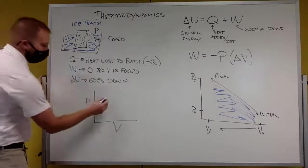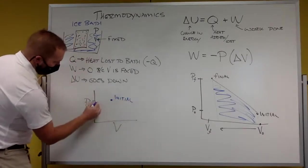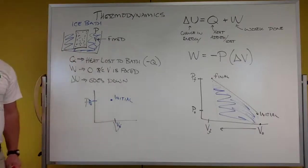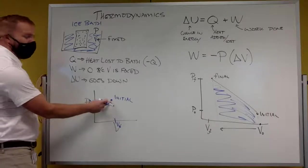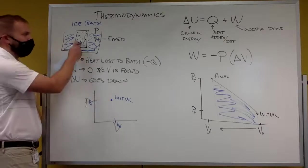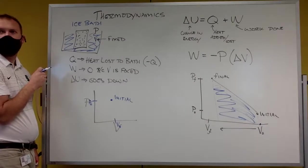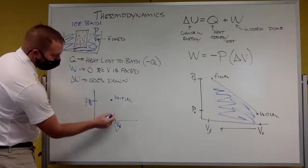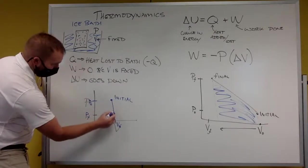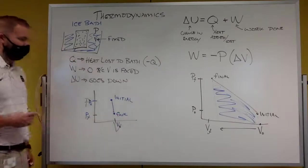We have some pressure initial and some volume initial. Since the volume stays constant, what do we think happens to the pressure? Pressure final — so my graph just went straight down vertically.